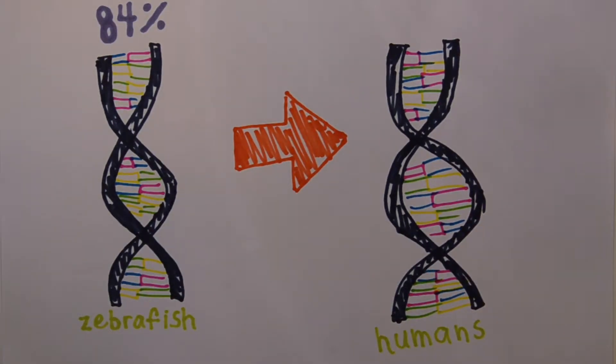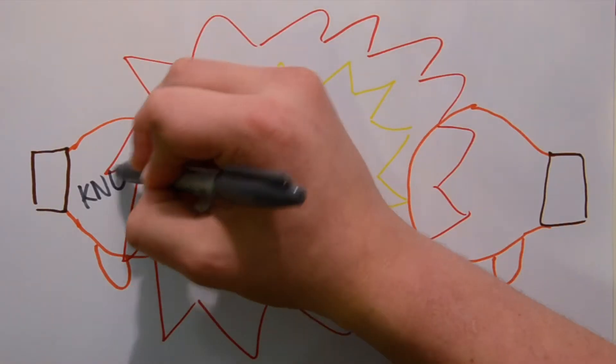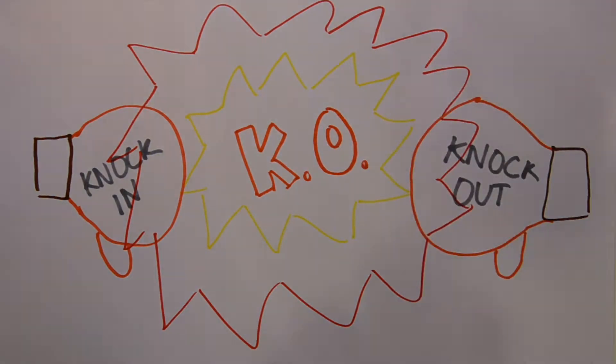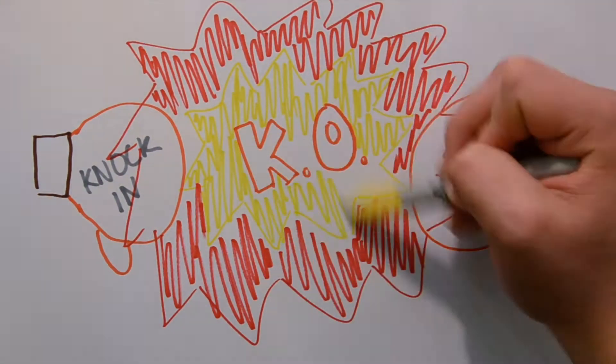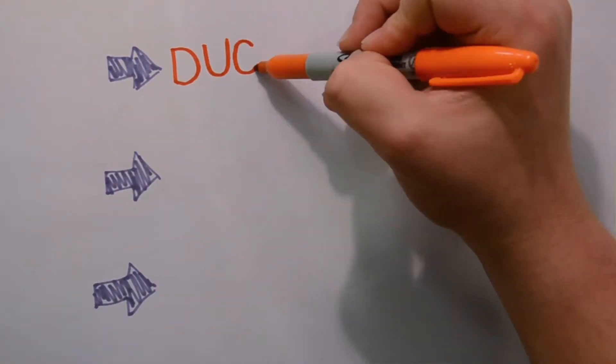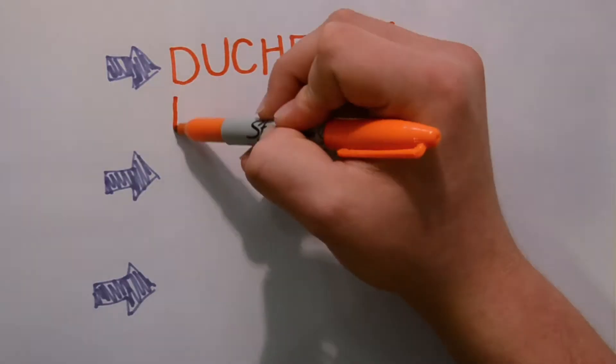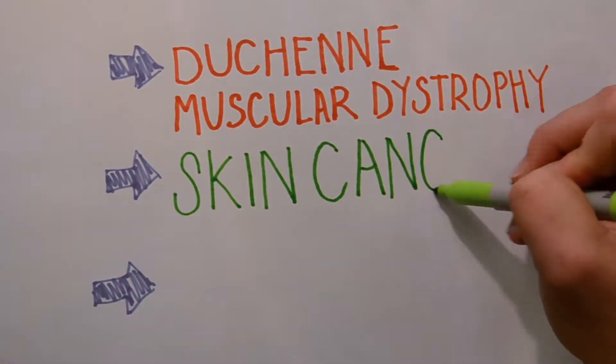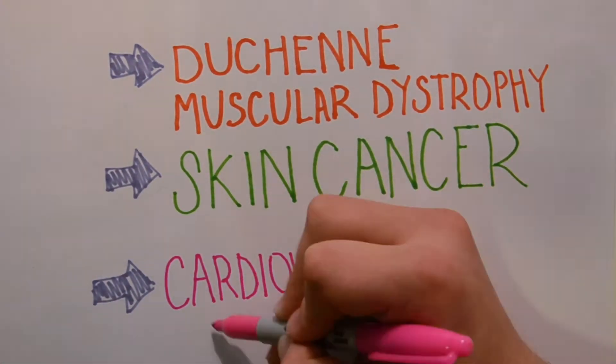Researchers can target specific genes to knock in, add to the genome, or knock out, take out of the genome, to see how biological processes change. These tools have allowed us to discover and target genes responsible for conditions such as Duchenne muscular dystrophy, skin cancer, and cardiovascular diseases.